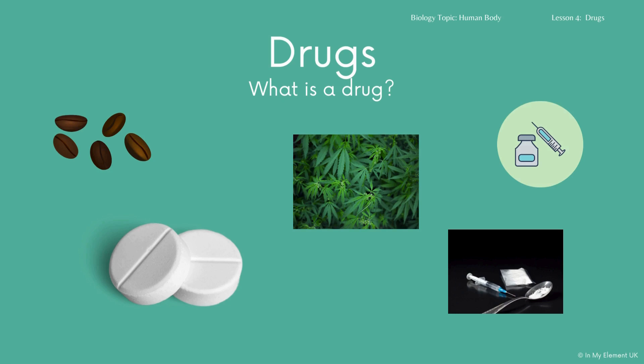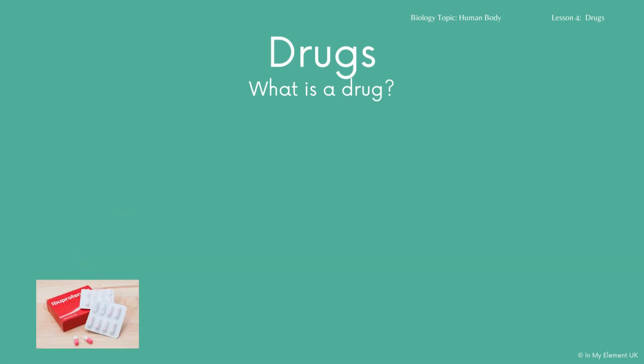You've got five images there of different drugs. Some are legal, some are illegal, some are medicines. You've got coffee beans to represent caffeine, there's some paracetamol tablets, there's a photograph of cannabis, oil with a spoon that is heroin, and the picture above is to represent steroids. Those are all drugs, but you need to know the definition of what a drug is.